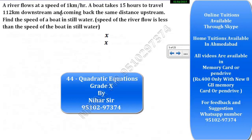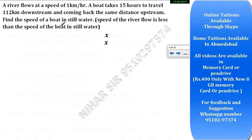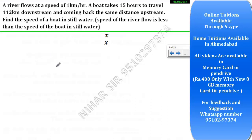Hello friends, let us solve this sum. A river flows at a speed of 1 km per hour — that means the speed of flow of the river, the speed of water. A boat takes 15 hours to travel 1.2 km downstream and coming back the same distance, 1.2 km upstream.